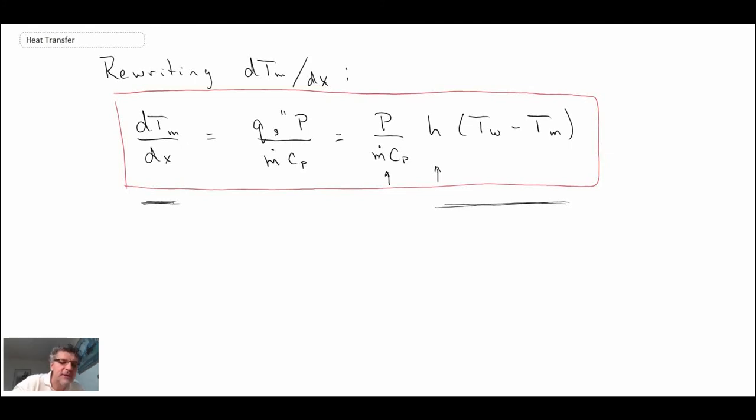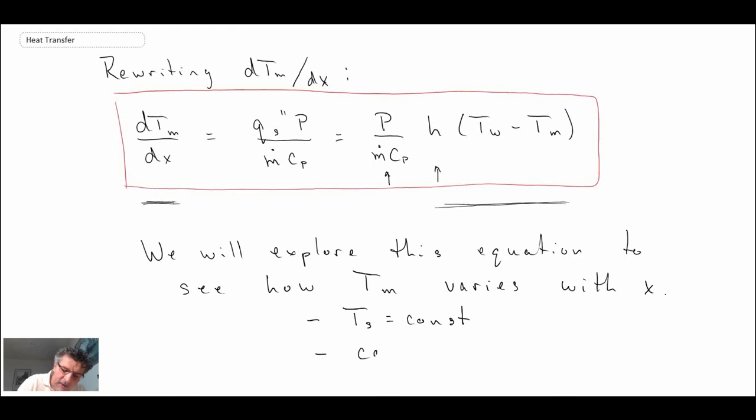But that gives us a relationship. What we are going to do is explore this equation to examine how Tm varies with x, and we'll do it with two boundary conditions: one is a constant temperature boundary condition, the other one is constant heat flux.